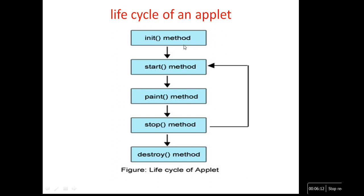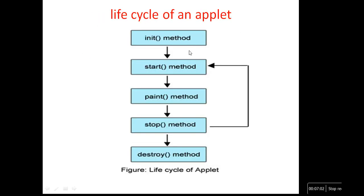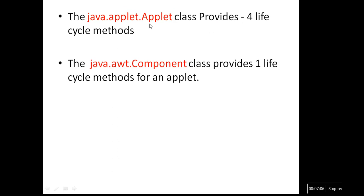Out of the five lifecycle methods, four methods belong to the Applet class and the paint method belongs to the Component class. The four lifecycle methods available in java.applet.Applet class are: public void init, public void start, public void stop, and public void destroy. The remaining one — paint — is available in the java.awt Component class.